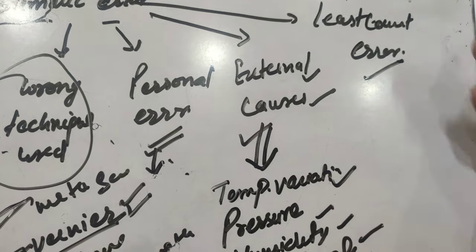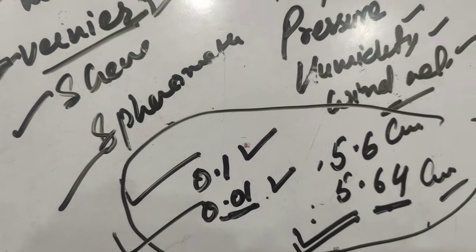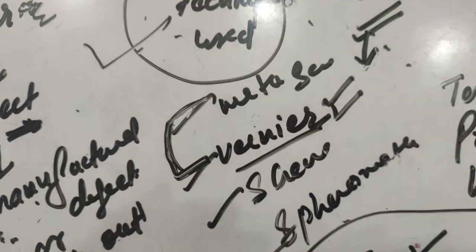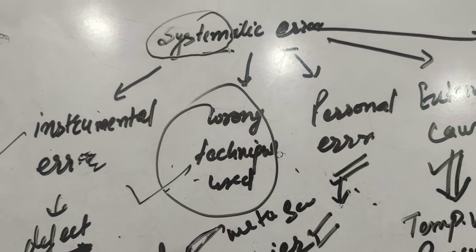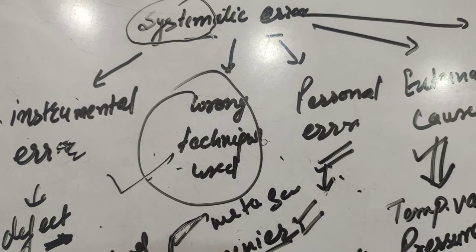And least count error actually, as I explained, this can be removed by using the instrument of high resolution. So systematic errors are those errors whose causes are known and these errors can be removed.